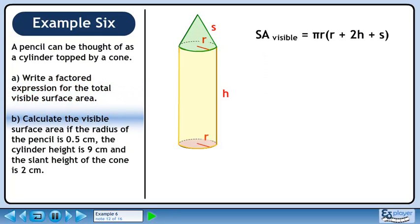In Part B, we will calculate the visible surface area if the radius of the pencil is 0.5 cm, the cylinder height is 9 cm, and the slant height of the cone is 2 cm.